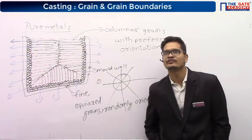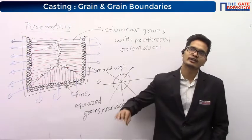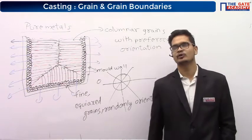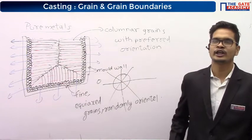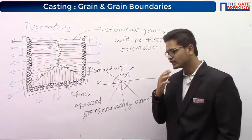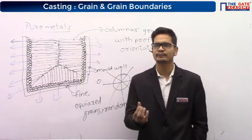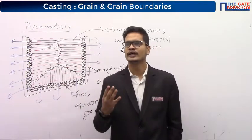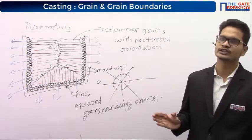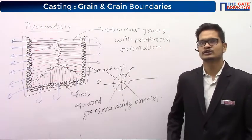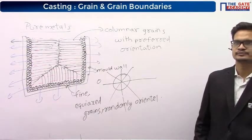Where grains interfere with each other, the mechanical properties will be affected. In fact, the mechanical properties depend upon the grain. In heat treatment, what we do is play with the grain orientation to change the mechanical properties.